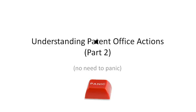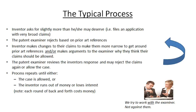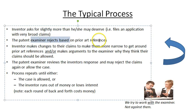This is our second video on responding to patent office actions. As you may recall from the first video, the typical patent process looks like this. We might start off asking for slightly more than we deserve, and sometimes you don't really know what that is until you try. That's why we like to start off with more general, broad claims that fairly define the scope of our invention. But chances are the patent office is going to do a search and find something that overlaps with our claims, and they're going to issue a rejection based on these prior art references.